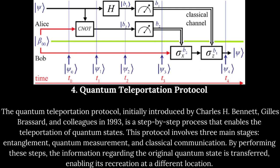This protocol involves three main stages: entanglement, quantum measurement, and classical communication. By performing these steps, the information regarding the original quantum state is transferred, enabling its recreation at a different location.